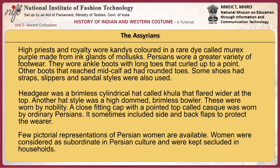High priests and royalty wore candies colored in a rare dye called murex purple, made from ink glands of mollusks. Persians wore a greater variety of footwear — ankle boots with long toes that curled up to a point, other boots that reached mid-calf with round toes, shoes with straps, and slippers and sandal styles. Headgear was a brimless cylindrical hat called khula that flared wider at the top. Another hat style was a high-domed brimless bowler worn by nobility. A close-fitting cap with a pointed top called cask was worn by ordinary Persians, sometimes including side and back flaps.